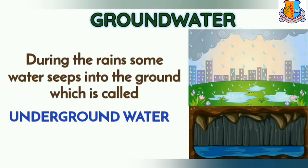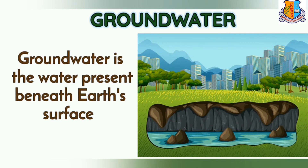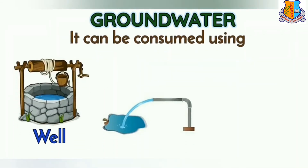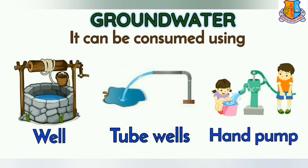Ground Water: During the rains, some water seeps into the ground, which is called underground water. Ground water is the water present beneath the earth's surface. It can be accessed using wells and hand pumps.